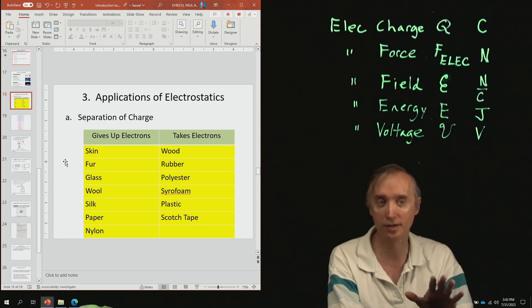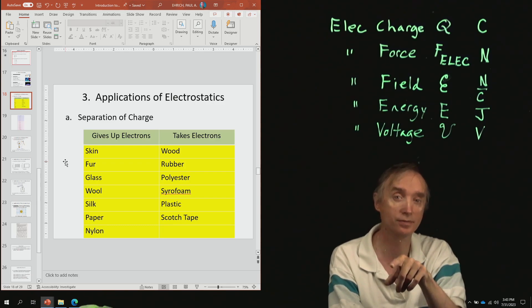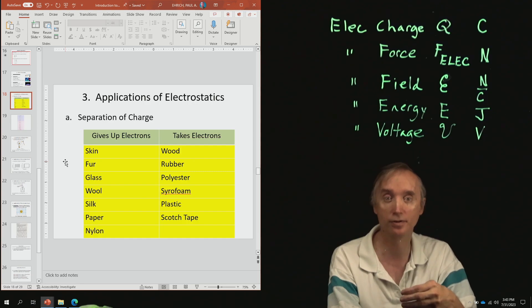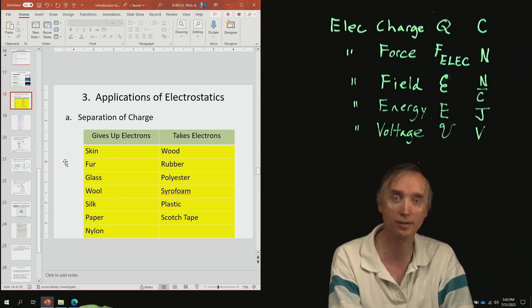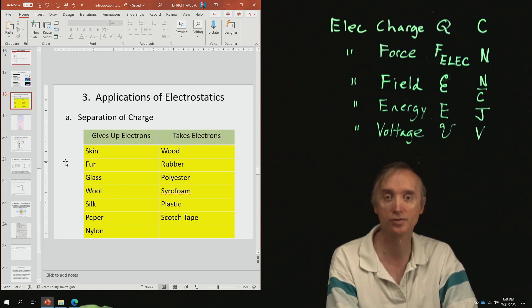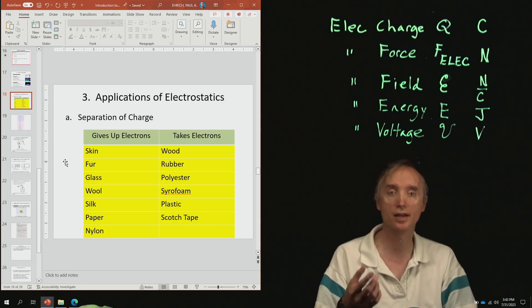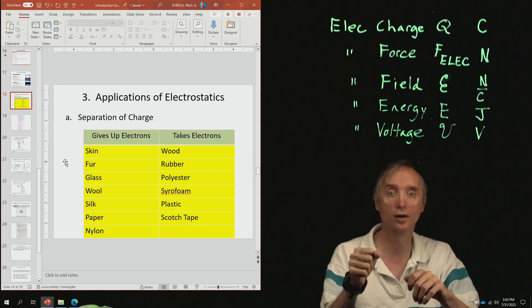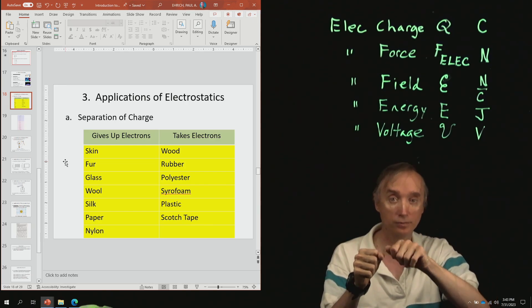Now, don't worry about this as being on the exam, but if I was to give you a chart like this on the exam, you should be able to know what's going on. On the other hand, wood likes to take electrons. Rubber likes to take electrons. Polyester, styrofoam, plastic, scotch tape - all of these kinds of materials like to take electrons. So what would happen if you were to take glass, like a glass test tube, and you're going to rub it with rubber?